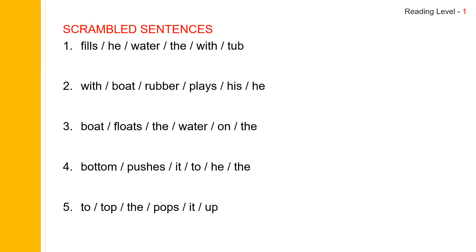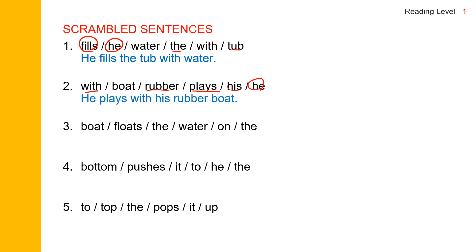Now find the subject and verb. He is the subject. Fills is the verb. He fills water or tub? He fills the tub. With water — he fills the tub with water. And then he is the subject, and plays is the verb. He plays with his rubber boat. The boat — there is no he, so boat is the subject and float is the verb. The boat floats on the water.